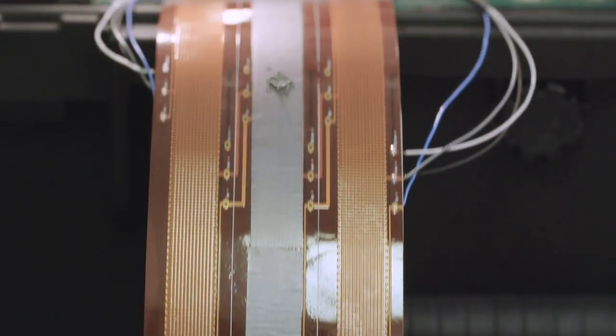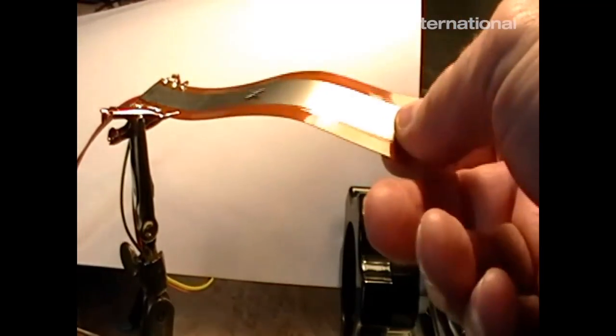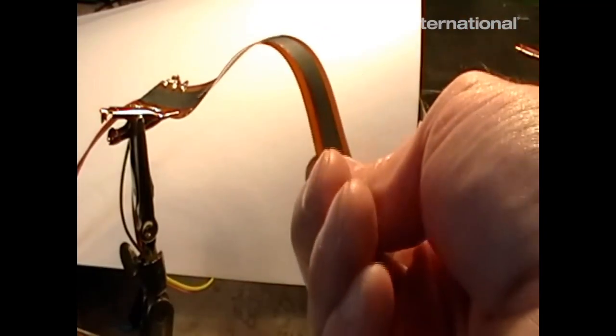Say hello to the littlest robots you ever did see. These are microbots developed at SRI International in Silicon Valley. They range in size from just half a millimeter on a side to about a centimeter.